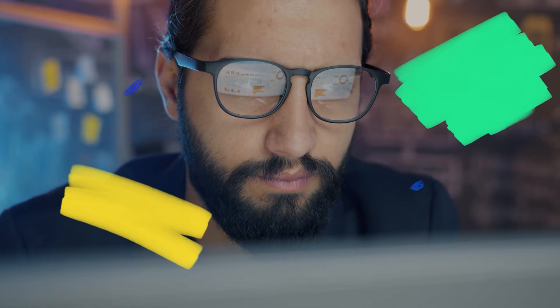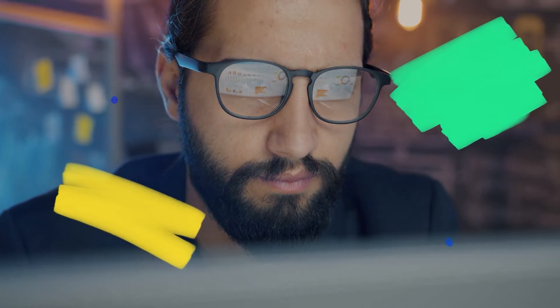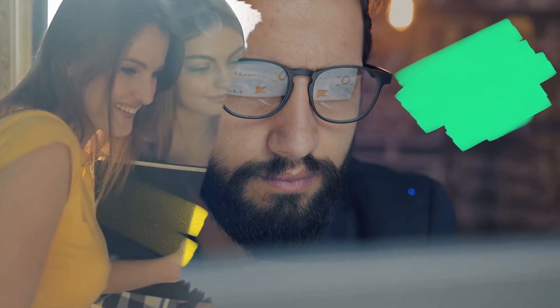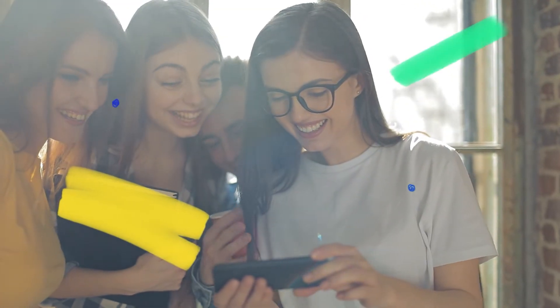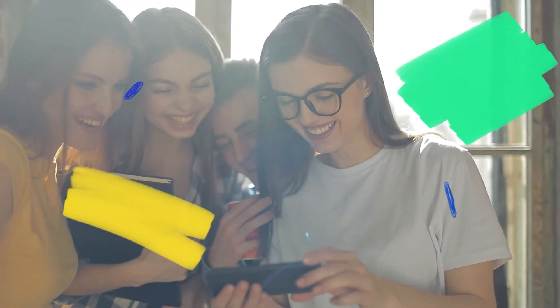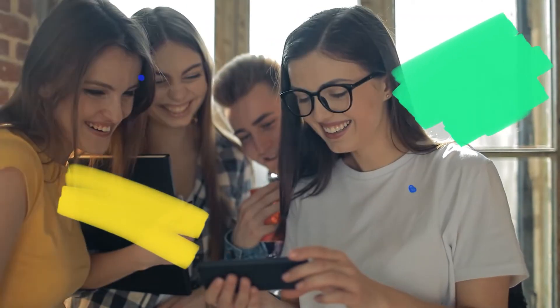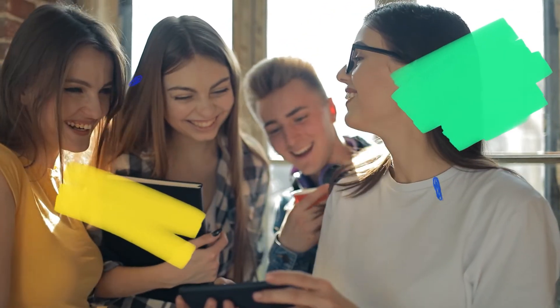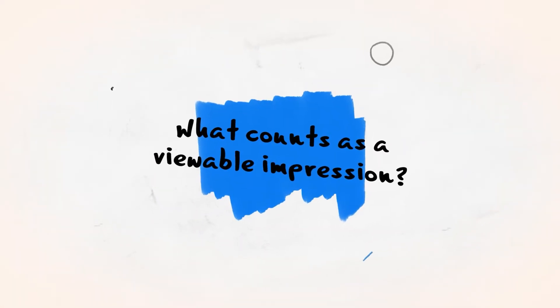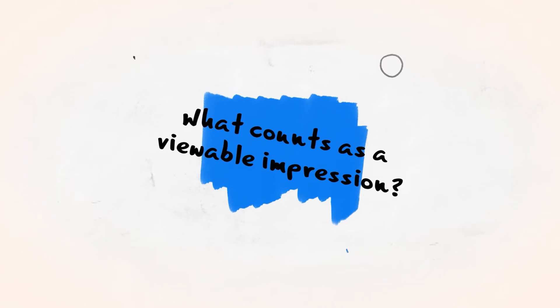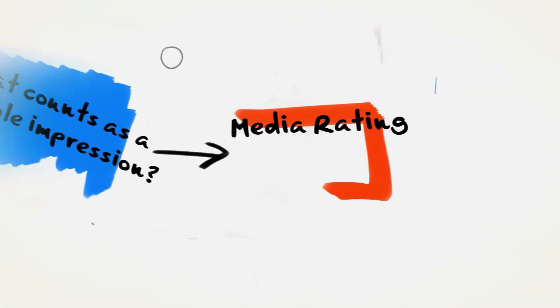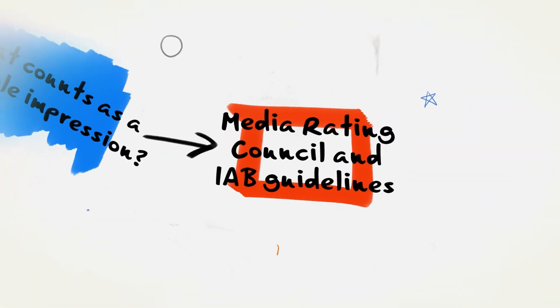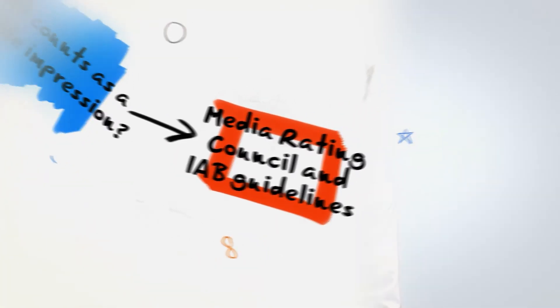Like most publishers, you may wonder what this metric means for your business and how you can capitalize on it. The vCPM metric is used to determine how many people view ads on a web page, rather than the number of users who are visiting the site. So what counts as a viewable impression?